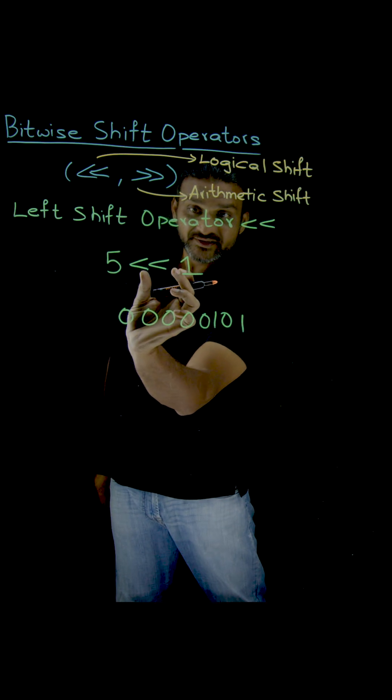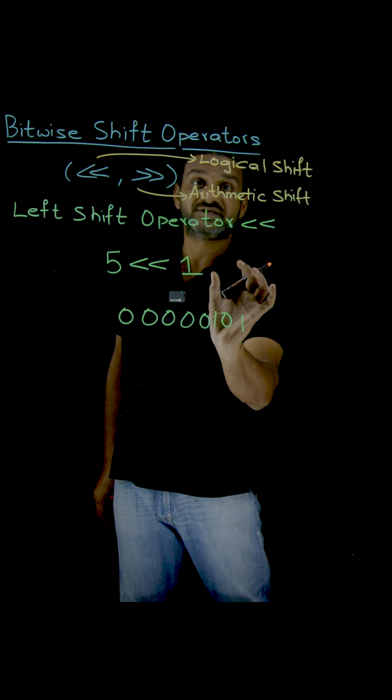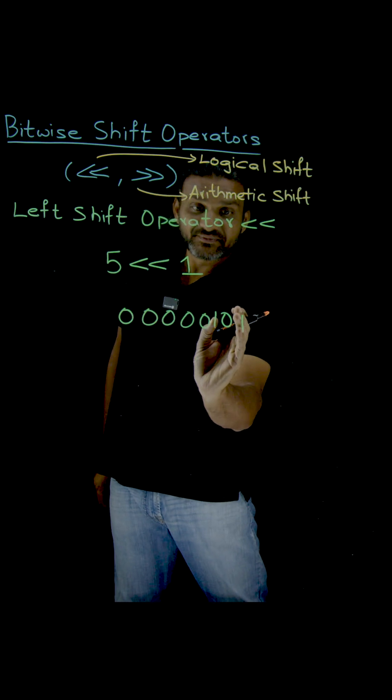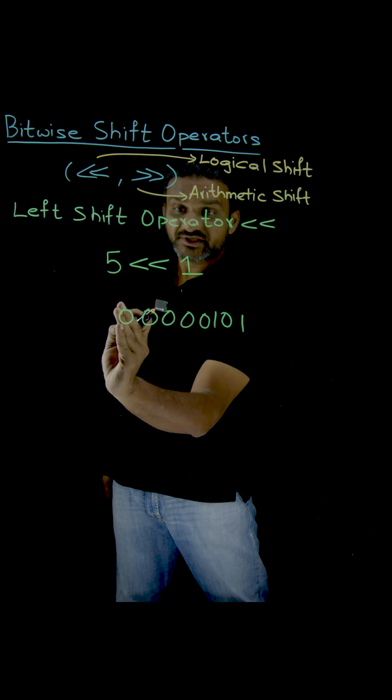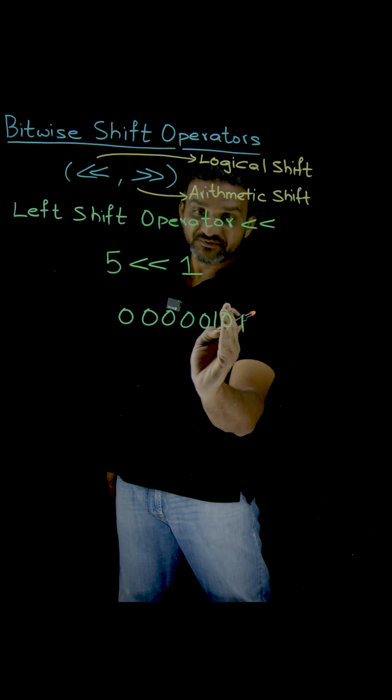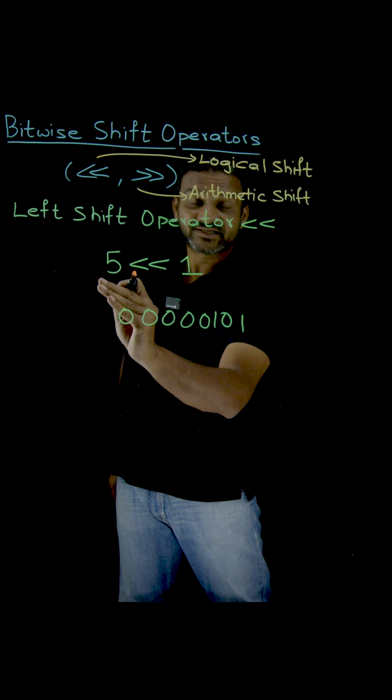Now, on applying this operator, what happens? We need to understand this first. When applying this operator, 1 bit will get shifted towards the left. This means this bit will be moved out, and all these bits will move one step ahead towards the left.